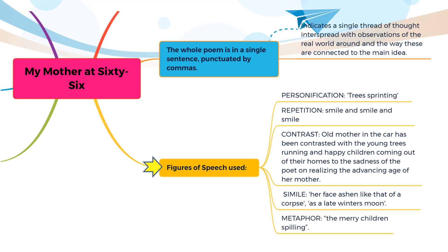Now let's talk about the figures of speech used in the poem. The poem makes use of a natural, unaffected rhythm, striking imagery, and other poetic devices to convey the insecurities and apprehensions of the poet about her rapidly aging mother and the inevitable separation that must follow. The poet uses the device of simile on two instances. First, when she compares her mother's pale face with that of a corpse — her pale face ashen like that of a corpse — the mother seems to have lost all vitality and looks like a dead body.